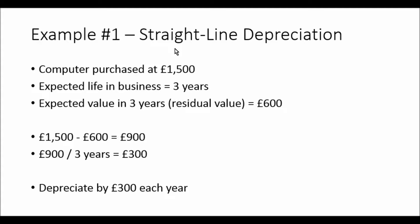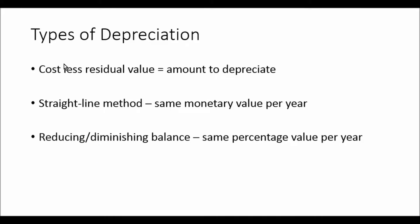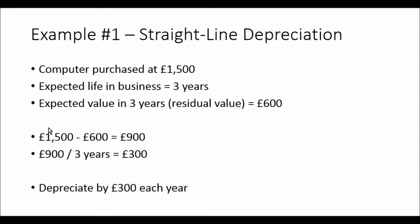Using straight-line depreciation, where the monetary value is the same each year: the cost of the asset is £1,500, minus the residual value of £600, equals £900 — that's the amount we need to depreciate over three years. £900 divided by three years is £300 per year. So each 12-month period we depreciate the asset by £300, and in three years the asset according to our accounts will be worth £600.